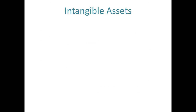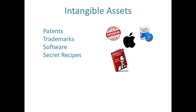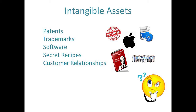But then on the other side, we got intangible assets. This kind of stuff is like patents, trademarks, software, secret recipes, even customer relationships. These intangible assets are things which have value, but they're not physical in nature and they're not financial instruments. Sometimes it's harder to recognize these assets and harder to assign values for them. But at least we can identify them and try to assign some value based on an estimate of how much money they might make for us in the future.